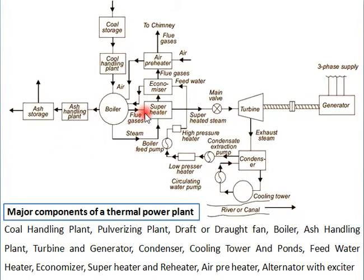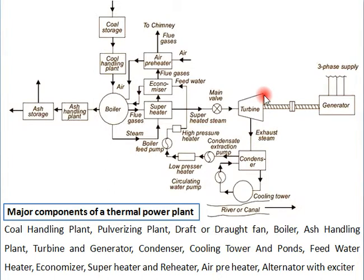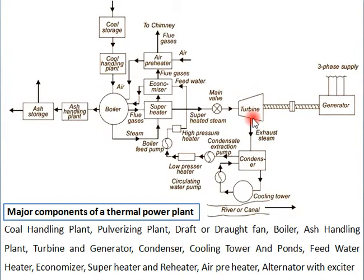Now, turbine and generator: the steam which comes at high temperature and pressure expands inside the turbine. The function of the turbine is to produce mechanical work when the steam expands. The blades are mounted on the shaft; when steam strikes the blades, they rotate, the shaft rotates, and this shaft is connected with the generator so electricity is produced.